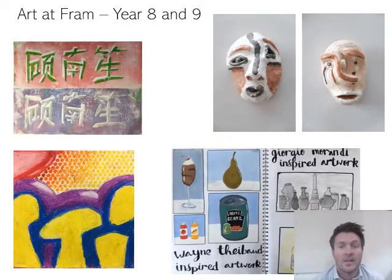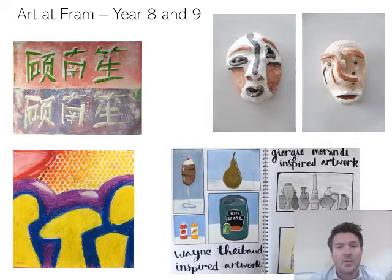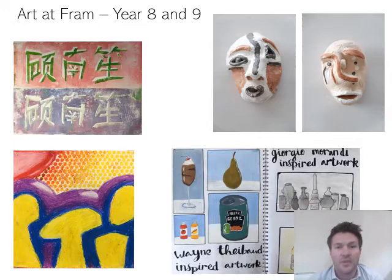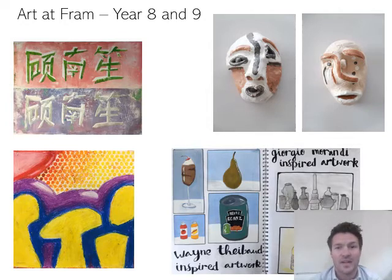Here you can see examples of some of the work that you would make in year eight and nine. In year eight we explore important art movements such as pop art and cubism, and carry on experimenting with painting, printmaking and ceramics. And in year nine you then move on to exploring key themes within art history such as still life and landscape.